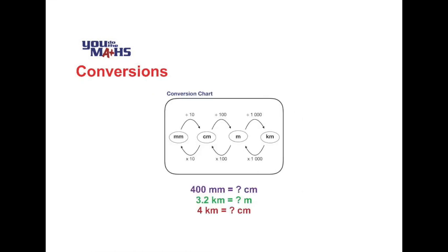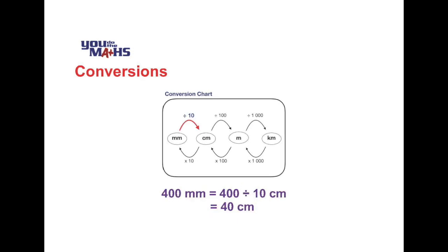Let's have a look at some examples — you may wish to pause here and try these yourself. The first one requires converting from millimetres to centimetres. We find millimetres on the chart and follow the arrow to centimetres, which means dividing by 10. So 400 millimetres becomes 40 centimetres.